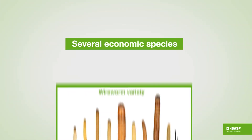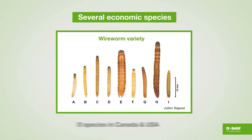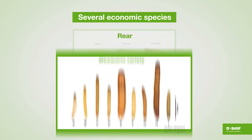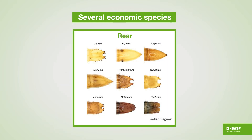Wireworms are not a single species. We're dealing with several economic species in North America — well over 20. This is a rogues' gallery of some of the pest species that we have in Canada, showing that they come in different sizes and shapes. And if you want to identify them, you look at the back end, which is what the professional scientists use to identify the different groups.